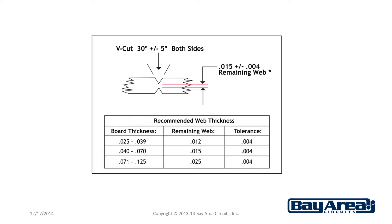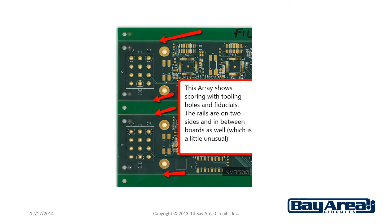Here in this diagram, you can see an example of a typical application of score to a printed circuit board — one-third on top, one-third on bottom, with approximately one-third of the material left remaining. In this application of this circuit board, you have scoring, tooling holes, and fiducials in the rails. In this case, which is unusual, they actually added an extra rail in between the boards that's also scored to help aid in the assembly process.